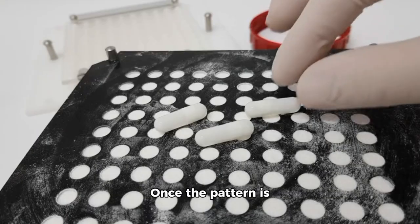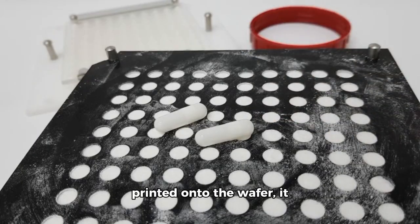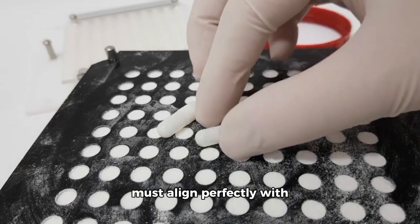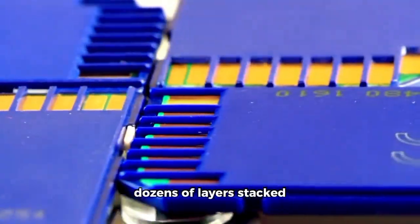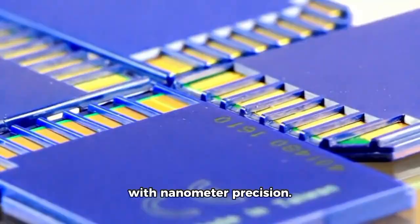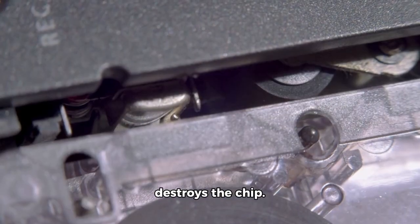But the challenge doesn't end with light. Once the pattern is printed onto the wafer, it must align perfectly with every previous layer. Modern chips contain dozens of layers stacked with nanometer precision. Any misalignment destroys the chip.